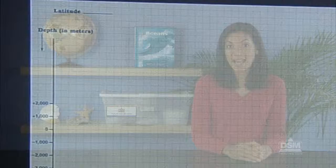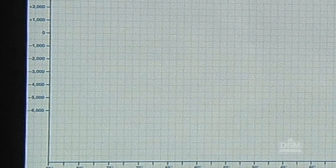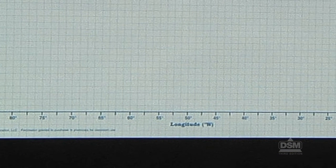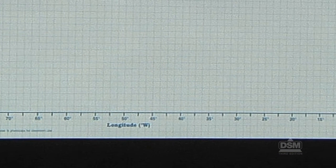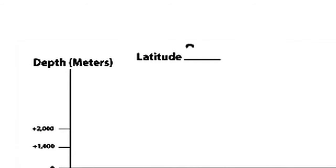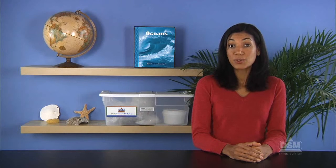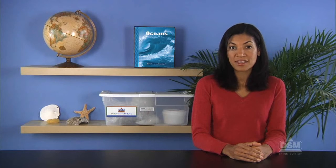Point out that the vertical axis represents the depth or height in meters along a given latitude. The horizontal axis represents longitude at intervals of 2.5 degrees. Instruct students to write the latitude of their depth profile at the top of their graph. Then have students locate the zero depth line on the vertical axis and draw a straight line across the paper. This line represents sea level and will act as a guide as they graph the depth data.